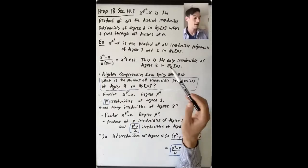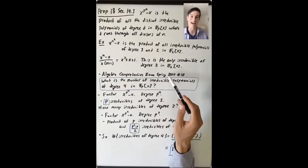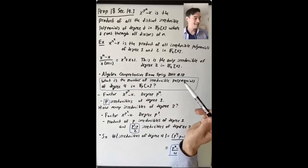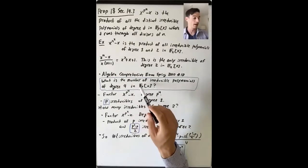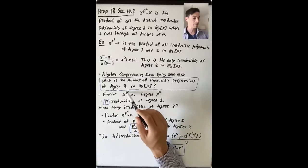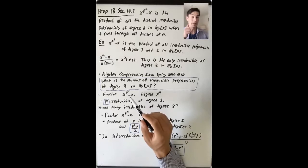Next, let's talk about a problem from a recent algebra comprehensive exam — spring 2010, number 10. This asks: what is the number of irreducible polynomials of degree 4 in F_p[x]? Well, x to the p to the 4th minus x is the product of all the distinct irreducibles of degree 1, 2, and 4 in F_p[x].